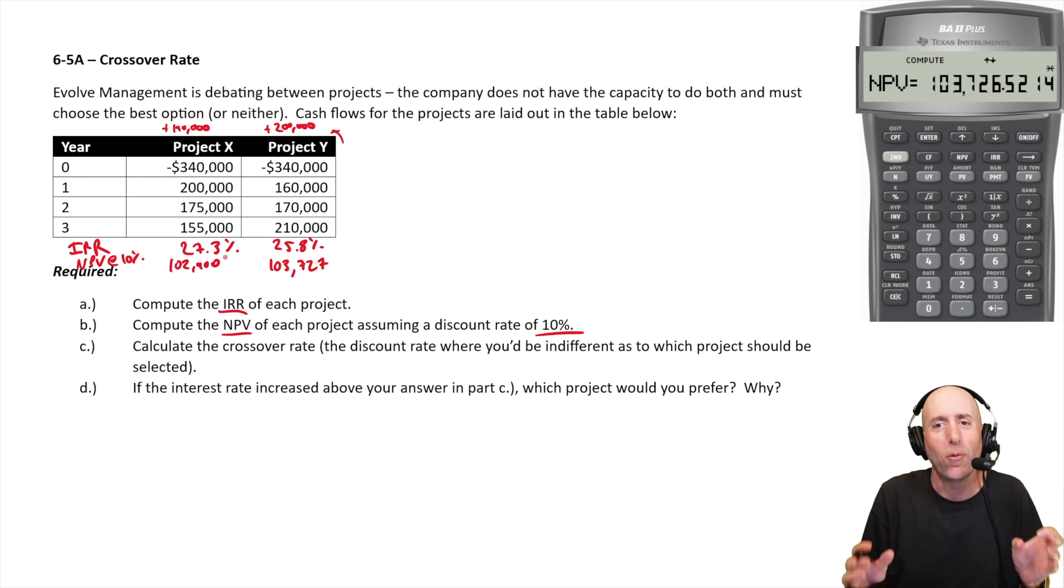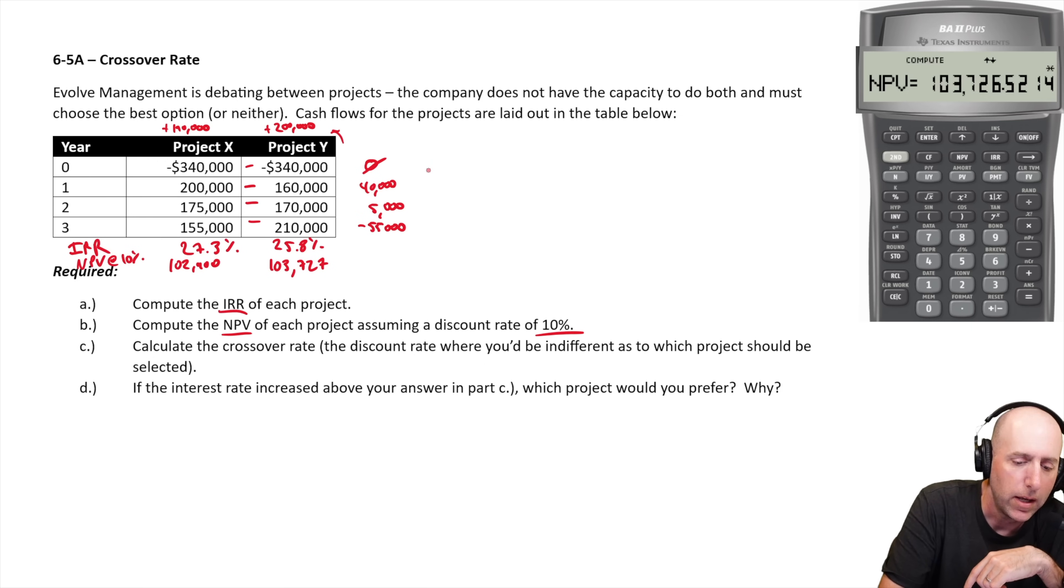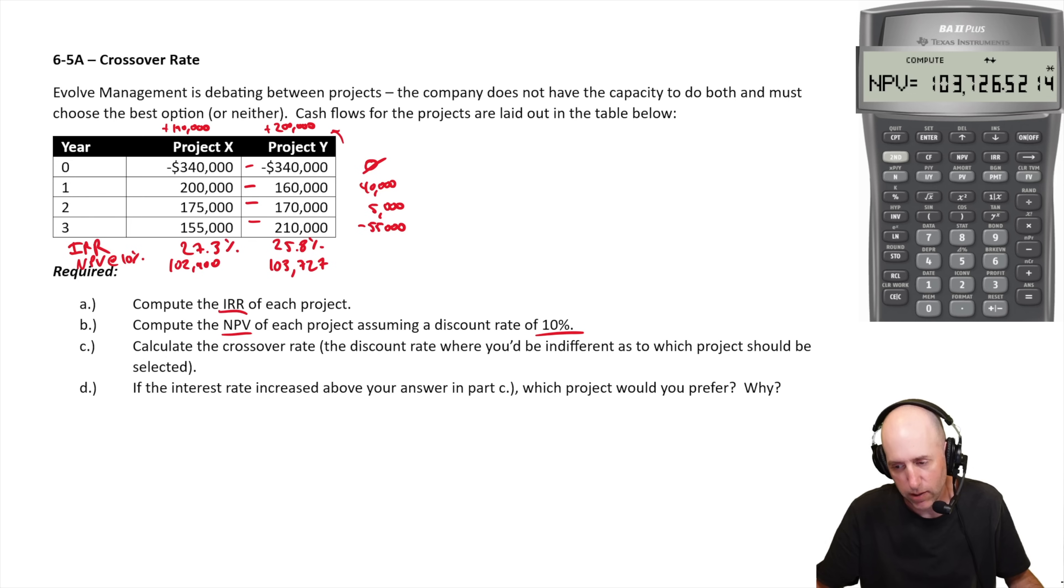The question is, at what discount rate do we switch from project Y to project X? In other words, everything below 10%, certainly project Y. Everything up to a certain number, we're going to like project Y better. At what point do we cross over? Here's how we do that. You subtract your two, you just find the difference between the two. So 340 minus negative 340, zero, there's no difference. 200 minus 160, that's 40,000. 175 minus 170, that's 5,000. And 155 minus 210, that's negative 55,000.